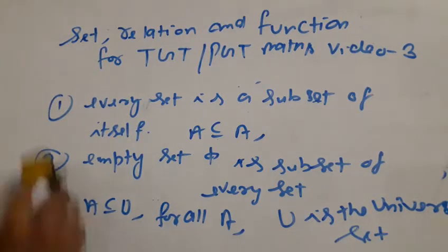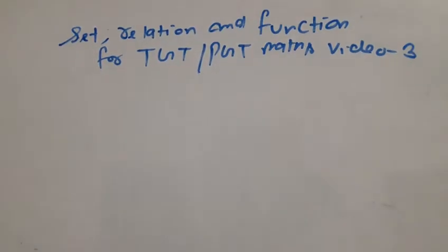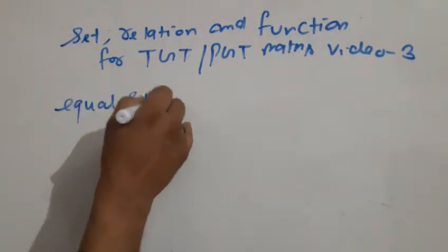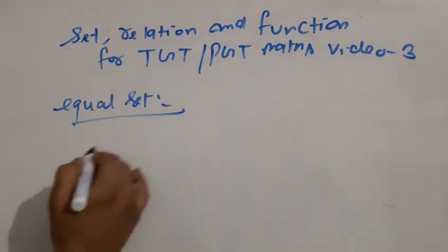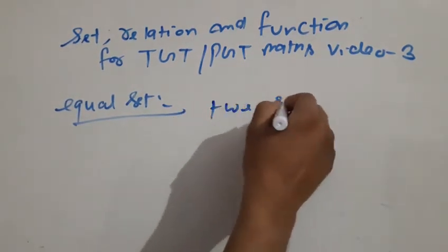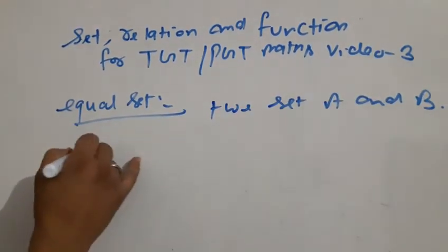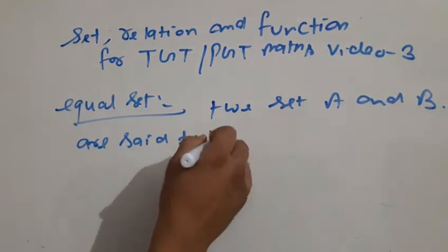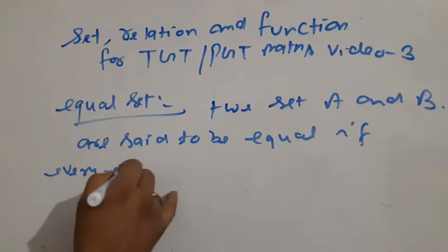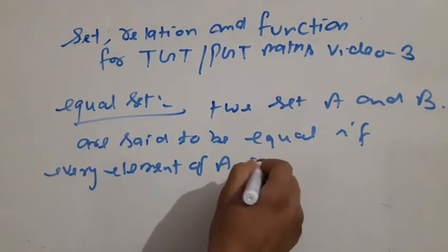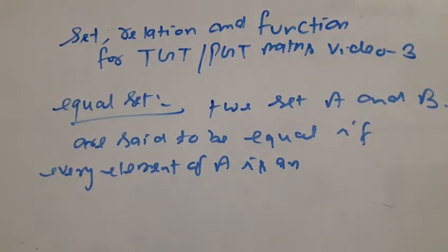Equal set. Two sets A and B are said to be equal if every element of A is an element of B.